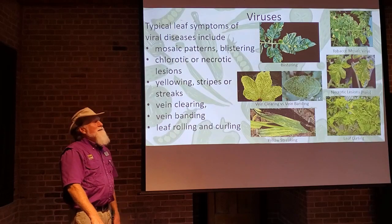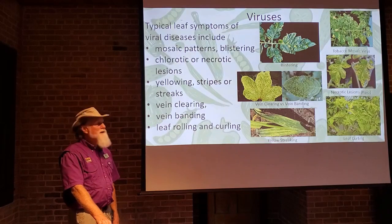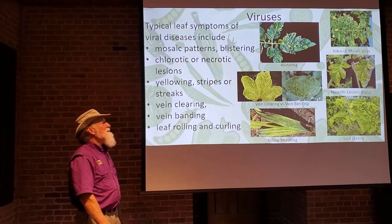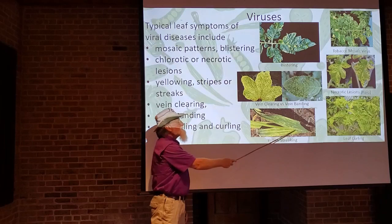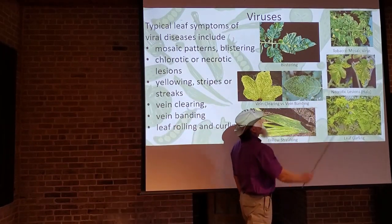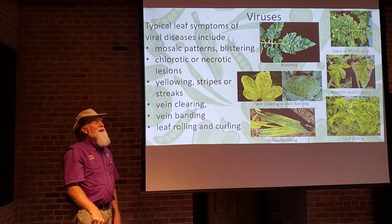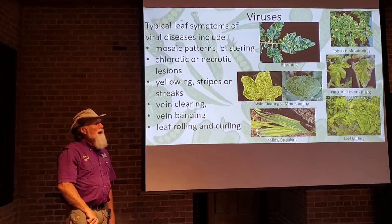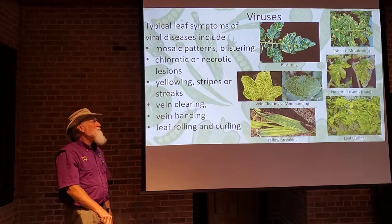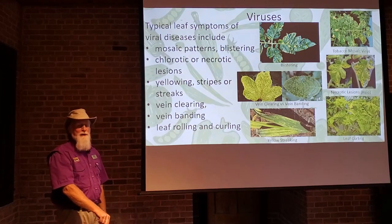You'll notice that a lot of viruses — and even fungi and bacteria — have the symptom included in the disease name. For example: maize yellow streak virus, tobacco mosaic virus, tomato leaf curl virus. You can see that a lot of times it's the virus symptom that gives the virus its name. There's no true nomenclature with genus and species for viruses.